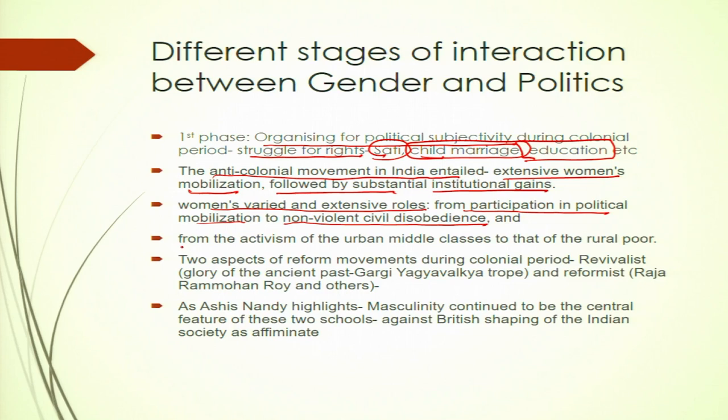It was not only limited to participation in political mobilization, but the non-violent civil disobedience movement started by Gandhi also had a significant role in invoking pride within women and constituting larger political consensus around the issue of women's participation. There was a shift from the activism of the urban middle classes to that of the rural poor women. Not only did women start participating in urban localities like Kolkata and Bombay, but women's participation started spreading in the rural sides of North India as well as South India. By late 1920s and early 1930s, the Indian national movement started spreading like a wildfire across India and women's participation went up manifold — Gandhi's contribution in this process was very significant.